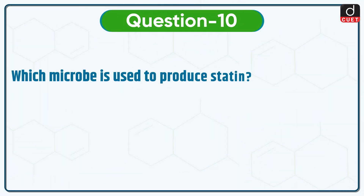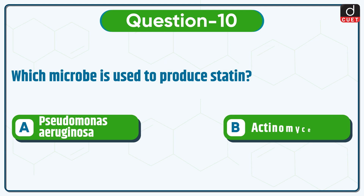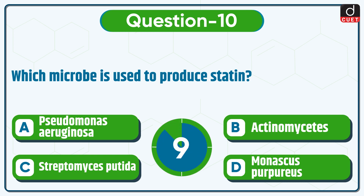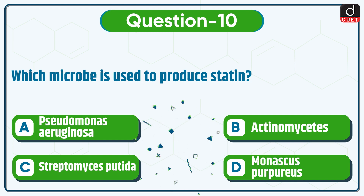The last question: which one of the following is used to produce statins? Pseudomonas aeruginosa, Actinomycetes, Streptomyces putida, or Monascus purpureus? The correct answer is option D, Monascus purpureus.